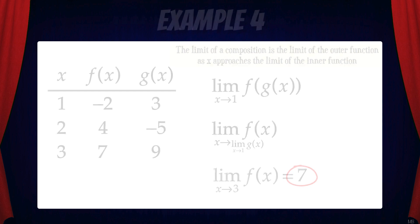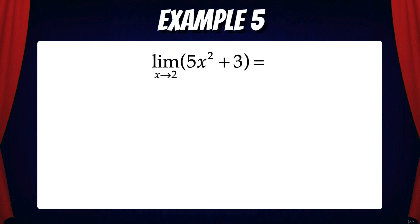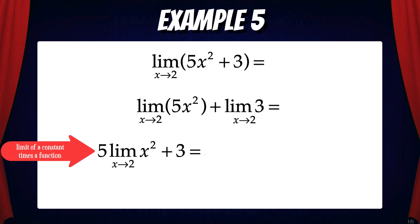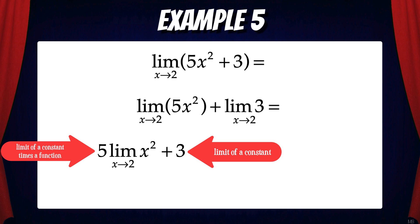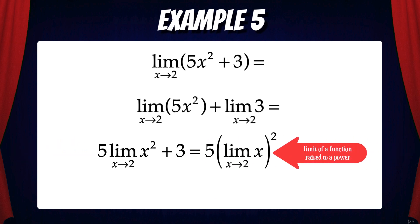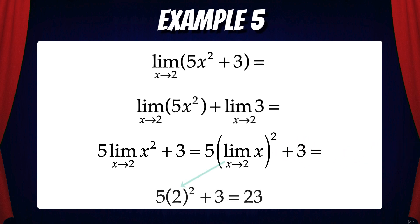Let's look at one more example to show how limit laws can be applied. Suppose we have the limit of 5x² + 3 as x approaches 2. We can break this up: the limit of 5x² as x approaches 2, plus the limit of 3 as x approaches 2, using the limit of a sum. Then we move the 5 in front — the limit of a constant times a function is the constant times the limit. The limit of 3 as x approaches 2 is just 3, since the limit of a constant is the constant. The limit of x² as x approaches 2 is the quantity of the limit of x as x approaches 2, squared. The limit of x as x approaches 2 is 2. Finally, 5 times 2 squared plus 3 equals 23.